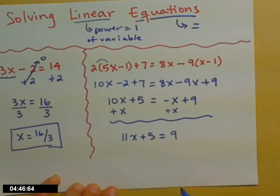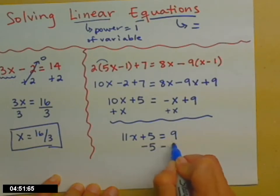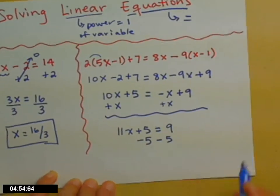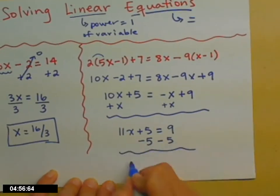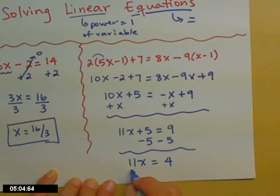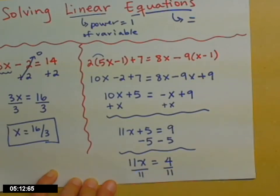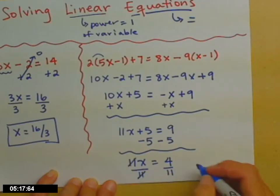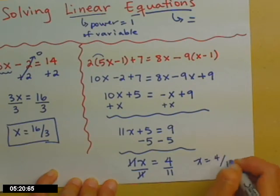So 11x plus 5 equals 9. The plus 5 has to move — I'm moving the entire term, so I do the opposite by subtracting 5 from both sides. That leaves 11x on the left, and a nice 4 on the right. Then we finish by dividing: I have 11x but I want just x, so I divide both sides by 11. The 11s cancel on the left, and the right gives my final answer.